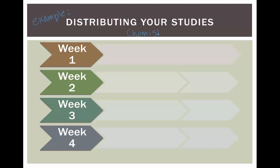One effective approach to distributed practice would be to revisit prior course content or material weekly. Let's use a chemistry course as an example. You have your chemistry midterm in week 5 of the term and your cumulative final in week 11. You wouldn't want to wait until week 5 or week 11 to revisit the material from week 1. Instead, consider building weekly review of prior material and topics into your study sessions.